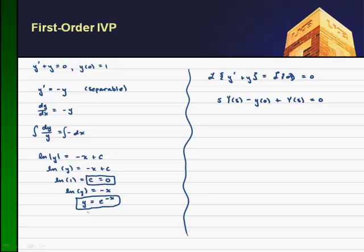We can factor out Y(s) from these two terms. So if I factor out Y(s), I'm left with s plus 1. Let's bring y(0) to the right-hand side. Our initial condition tells us that y(0) equals 1.